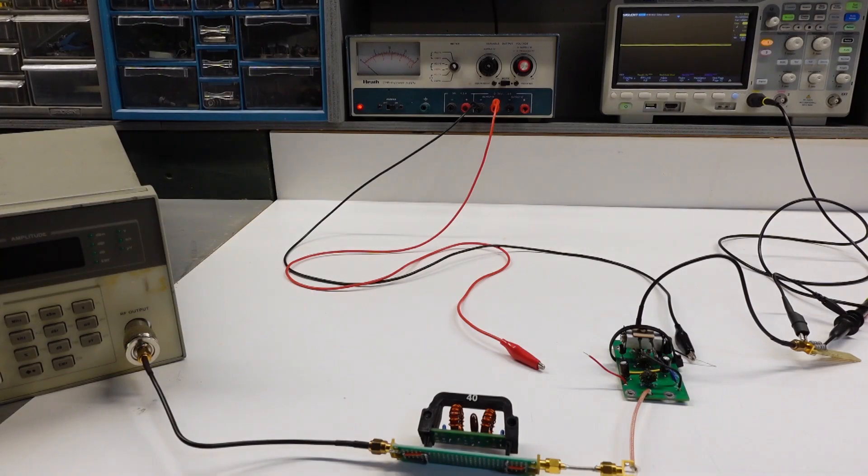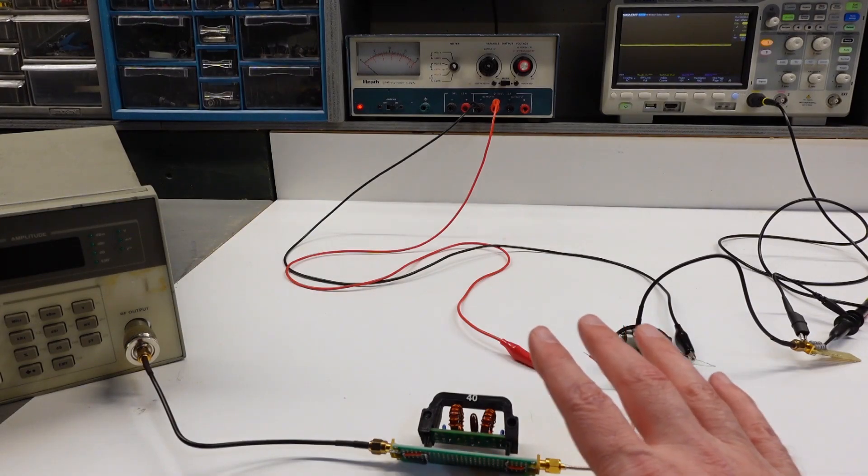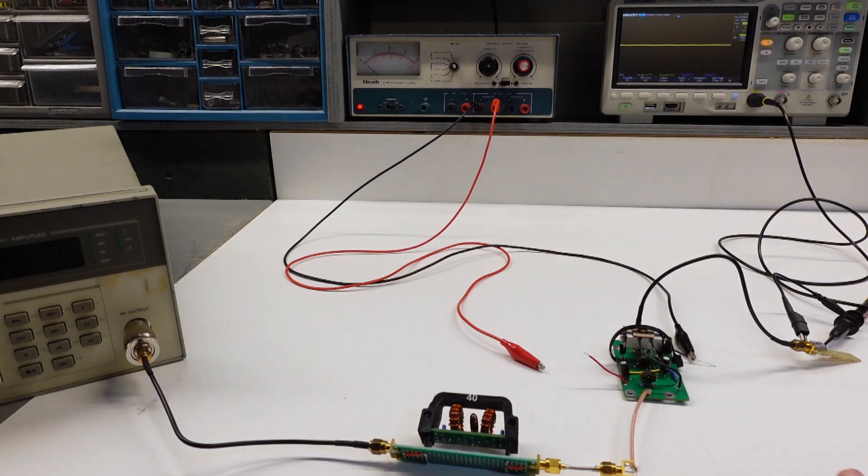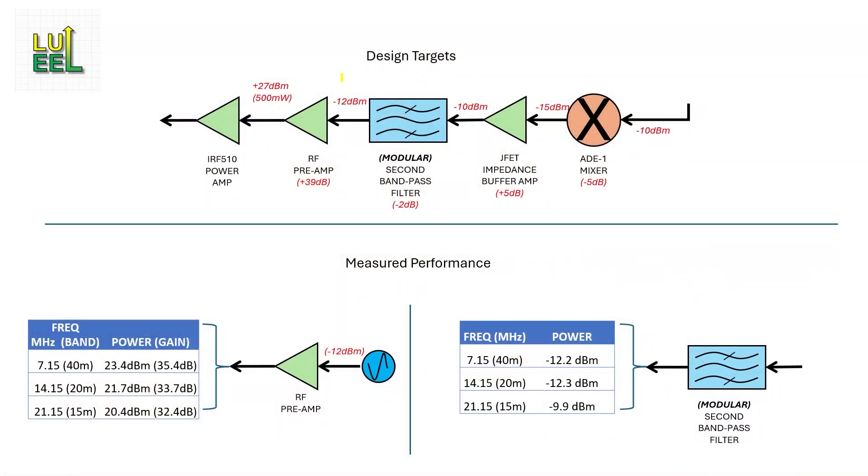The first area to improve is power output. Let me put this slide on screen showing an excerpt of the transmitter block diagram. By design, I want minus 12 dBm coming out of the bandpass filter feeding into the preamp, which will boost it to 27 dBm or half a watt. That's a gain of 39 dB. The bottom shows actual performance. I measured minus 12 dBm going into the amp, actually overperforming on 15 meters.